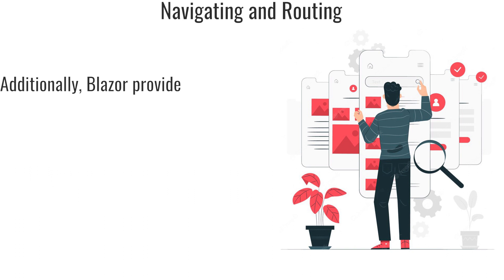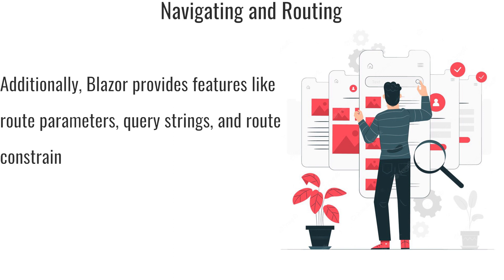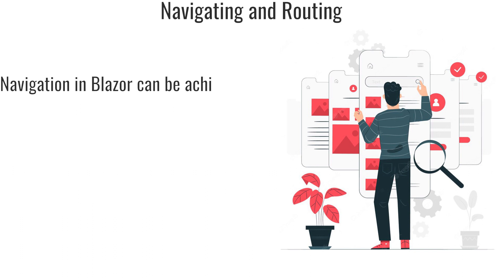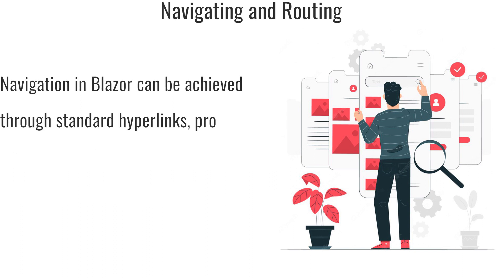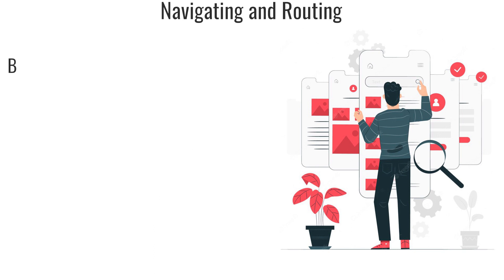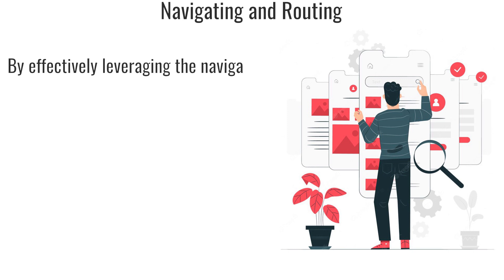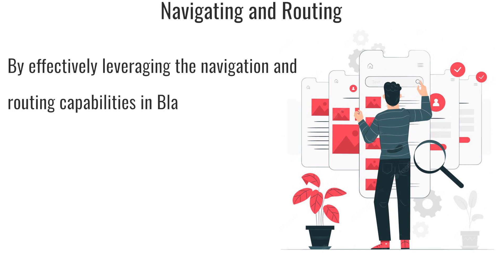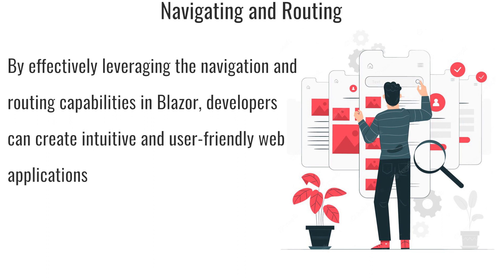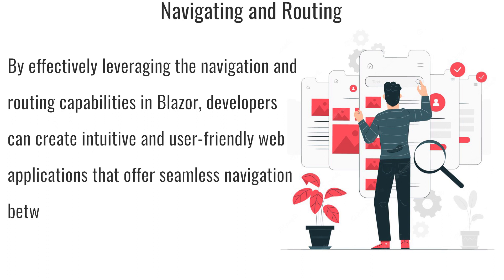Additionally, Blazor provides features like route parameters, query strings, and route constraints, allowing for more complex and customized routing scenarios. Navigation in Blazor can be achieved through standard hyperlinks, programmatic navigation using code, or navigation controls provided by the framework. By effectively leveraging the navigation and routing capabilities in Blazor, developers can create intuitive and user-friendly web applications that offer seamless navigation between different views and pages.